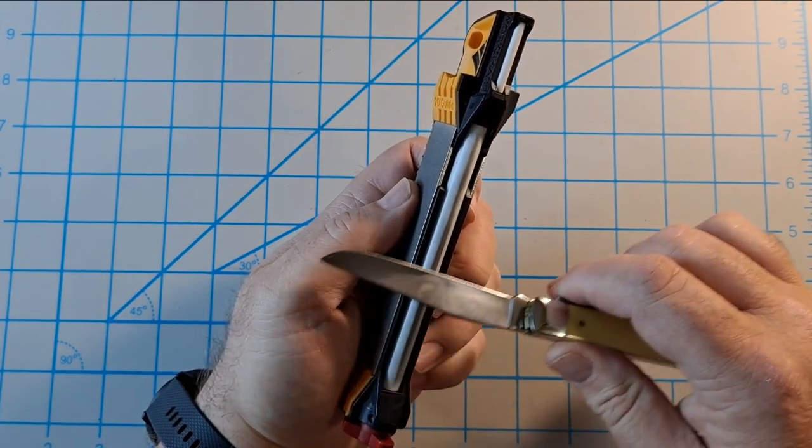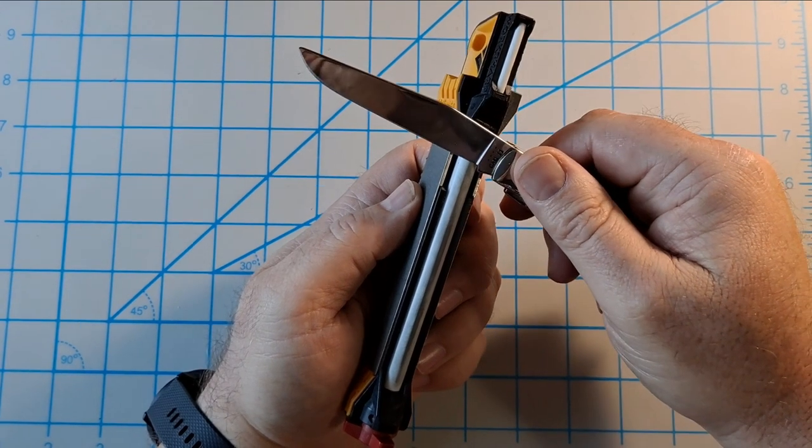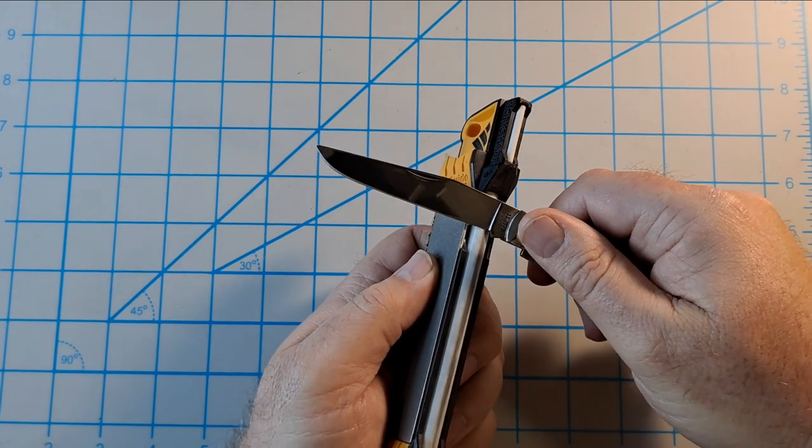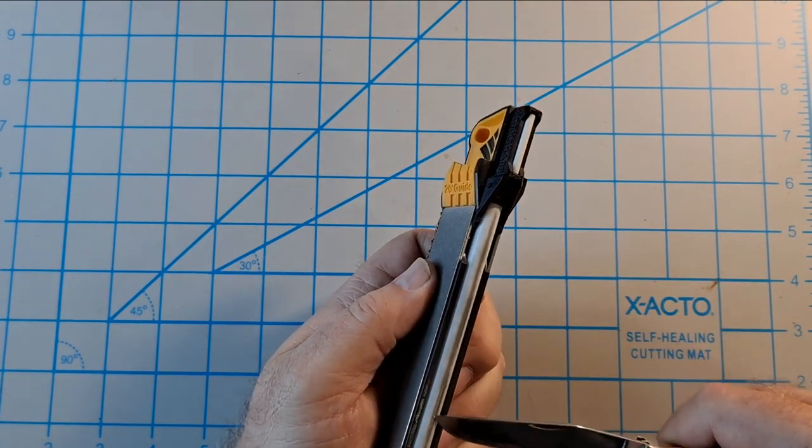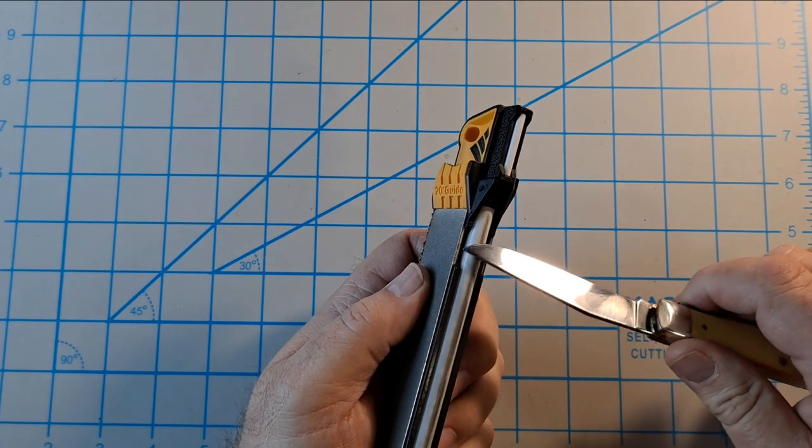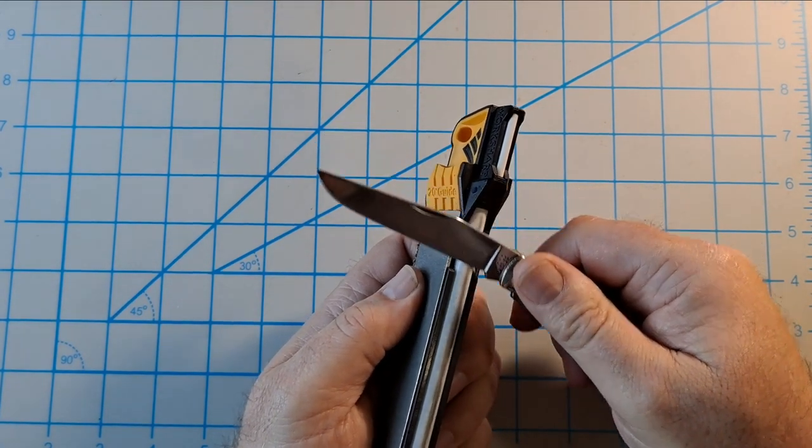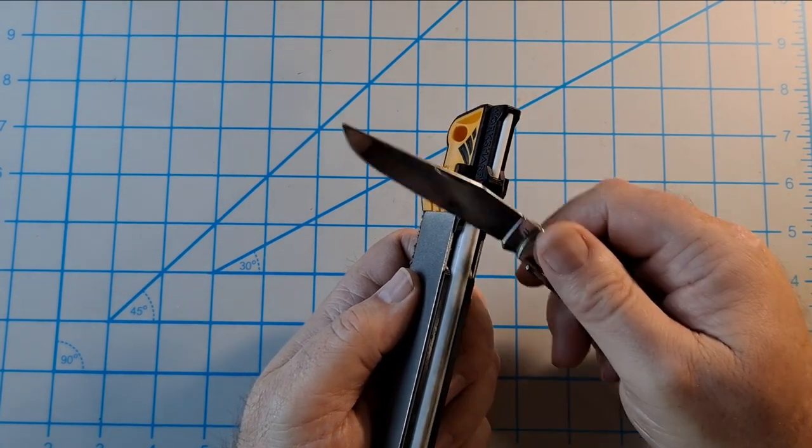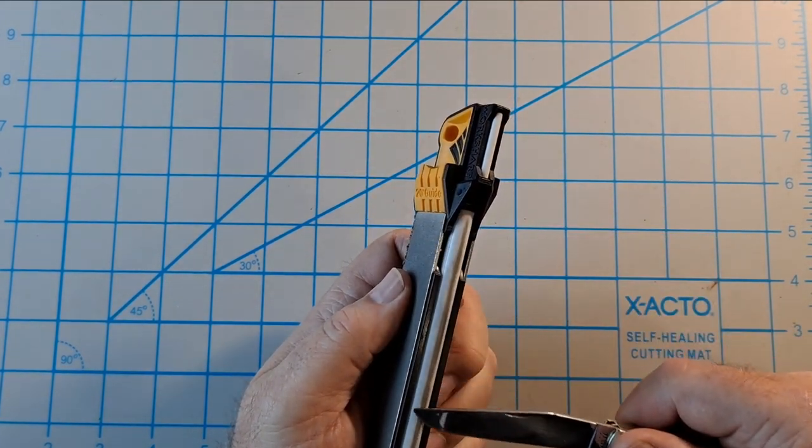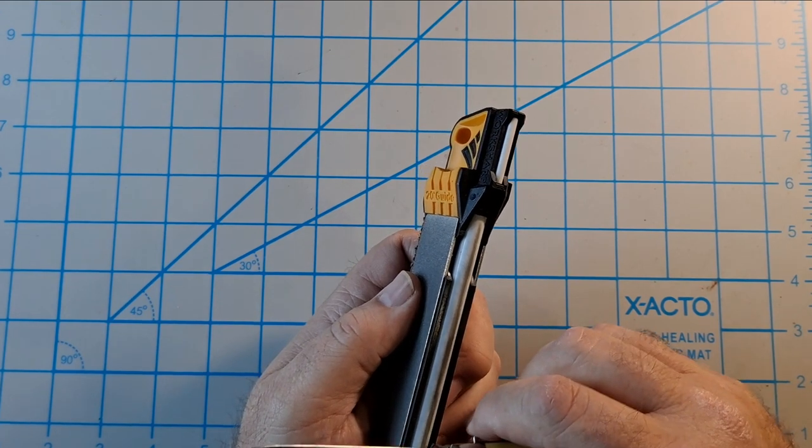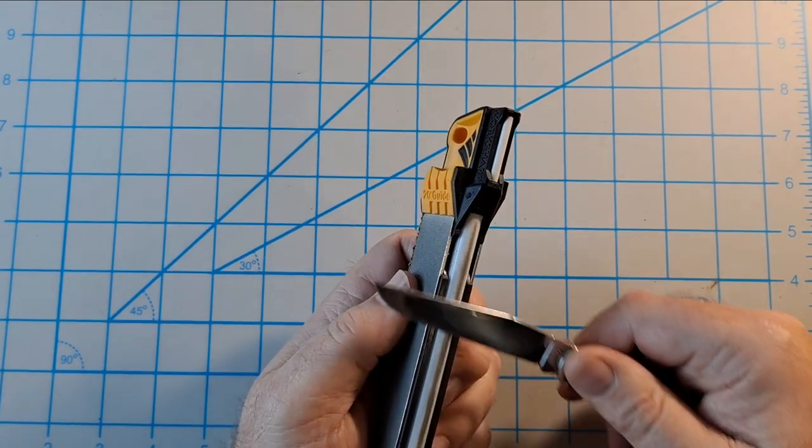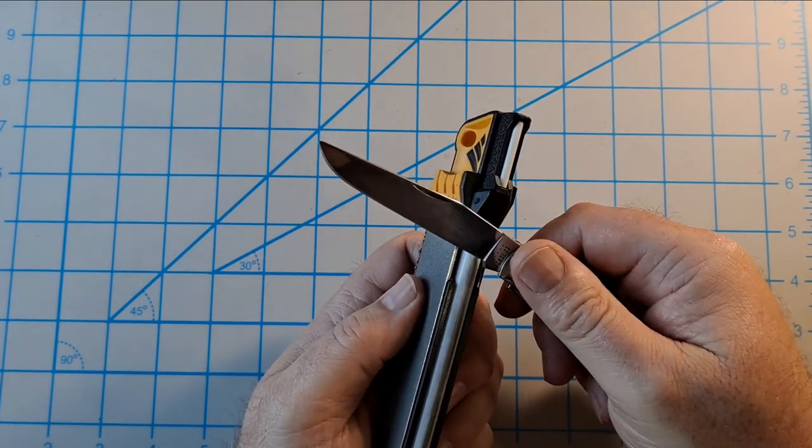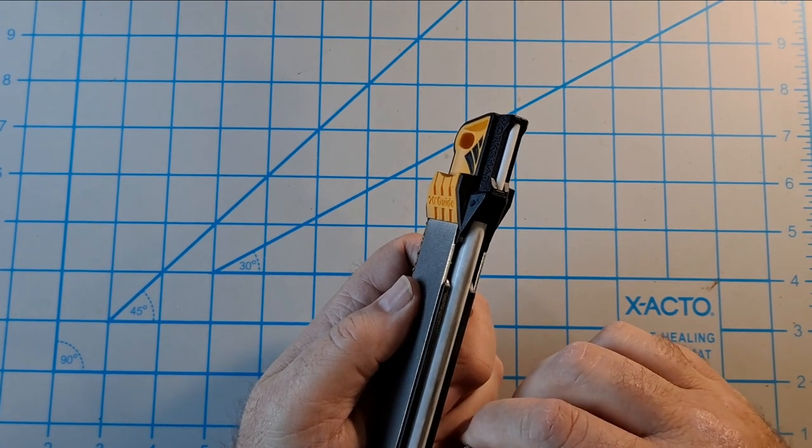The only thing about this is it's hard to get right up against the sharpening choil. Kind of have to do it off at an angle like this. This makes it a little more difficult.